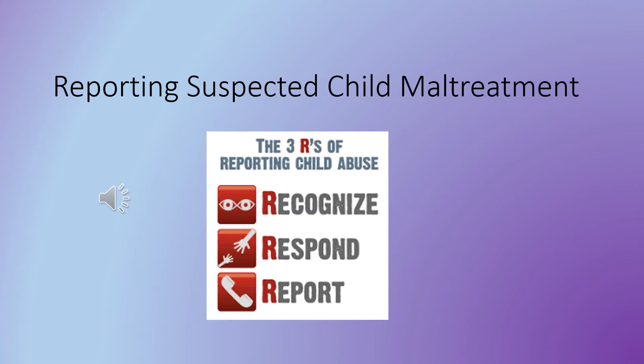Parents need to be told that we suspect child maltreatment and that we are going to investigate to make sure the child is safe. It's important to have open lines of communication with the parent and child in a non-accusatory fashion. When taking a history, maltreatment is not always done by the parent or significant caregiver. There could be alternate caregivers at fault — daycare workers, babysitters, the parent's significant other, a new spouse, a boyfriend, a girlfriend, or another relative. Don't always assume it's the parent.